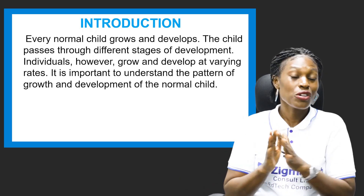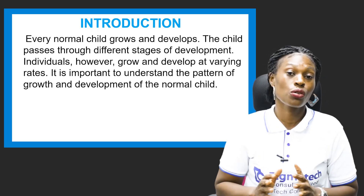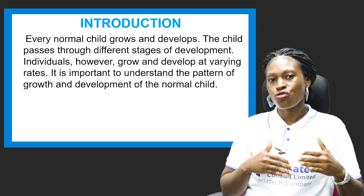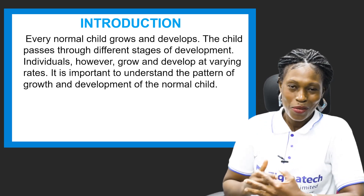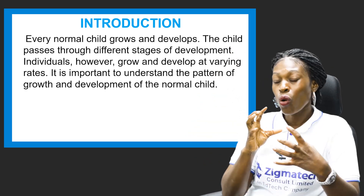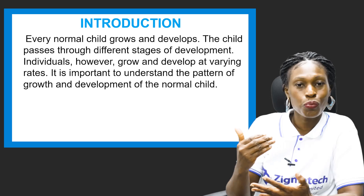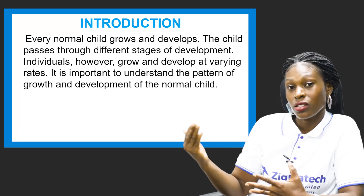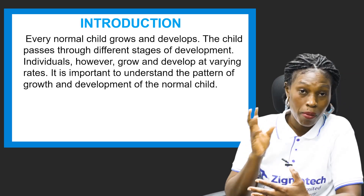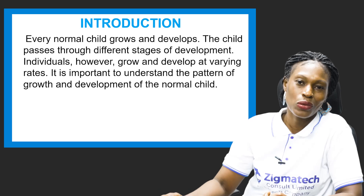Every normal child grows and develops — that is how nature intends it. Every normal child must grow and develop. The child passes through the different stages of development, from birth and infancy all through to when the person is fully grown. Individuals, however, grow and develop at varying rates, so you cannot use one person's rate of growing to judge others. It is important to understand the pattern of growth and development of the normal child — what is expected at every stage.